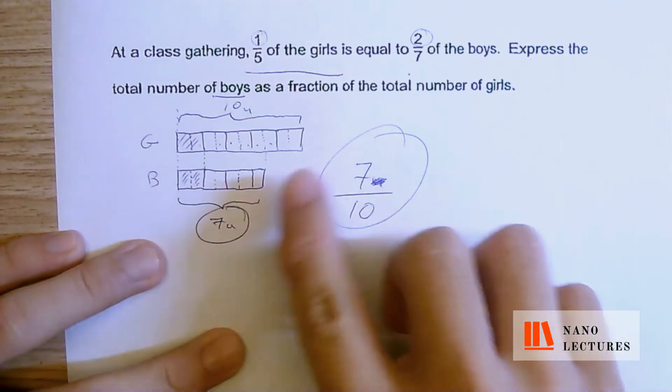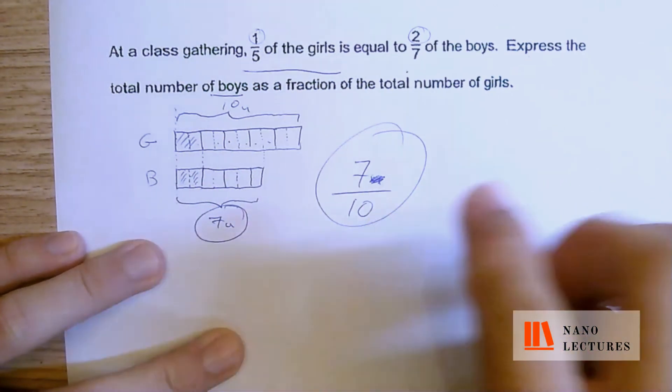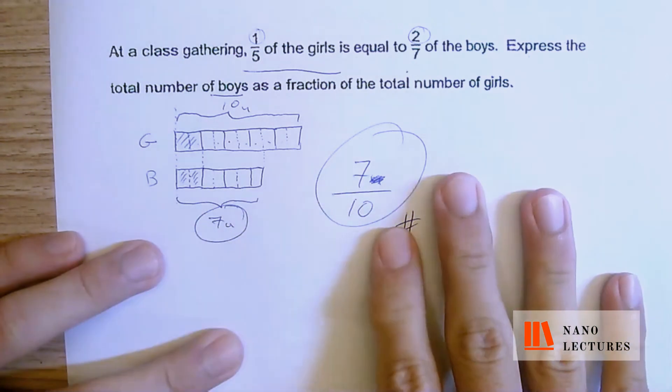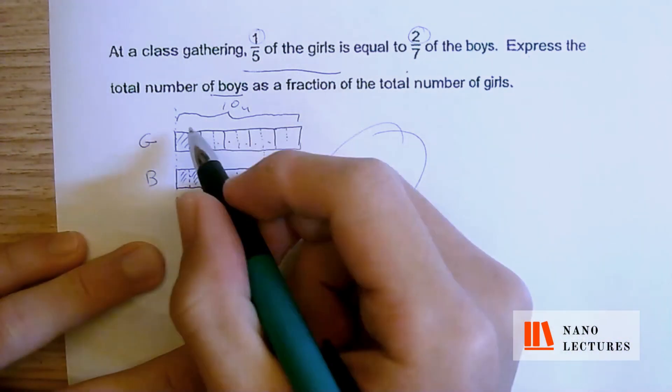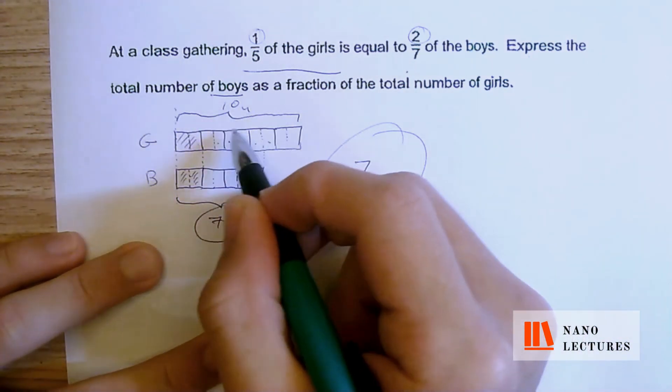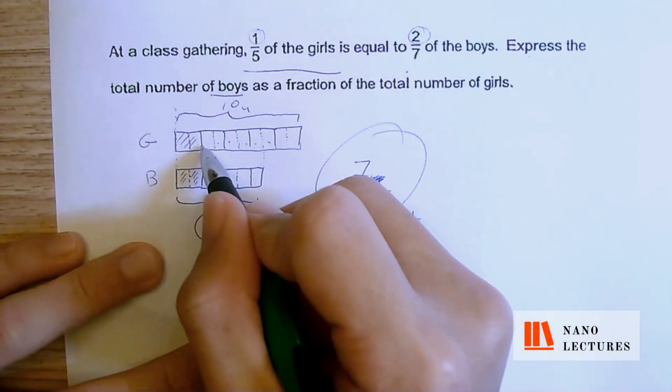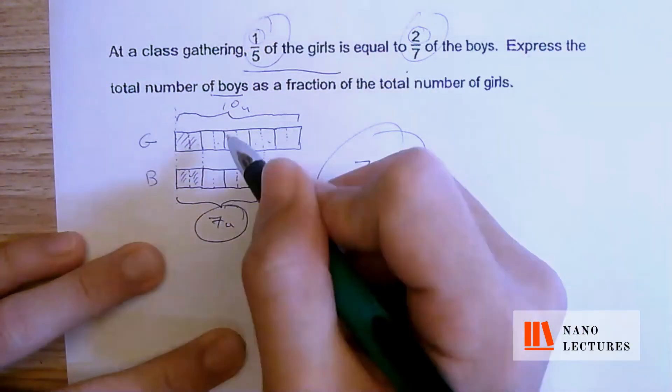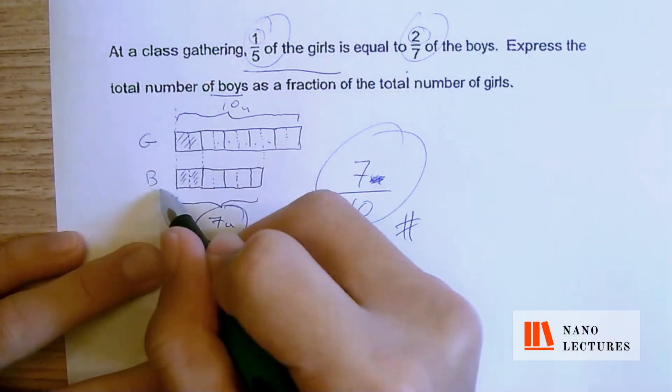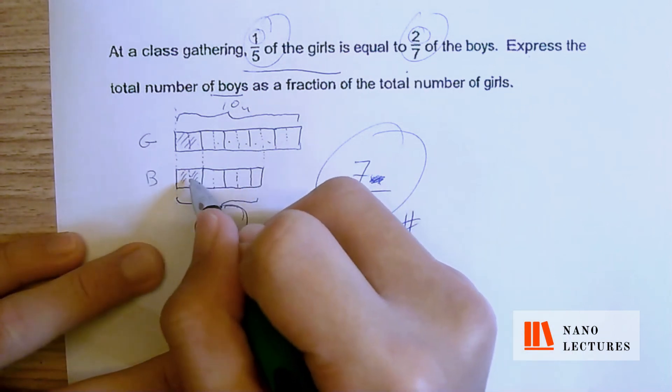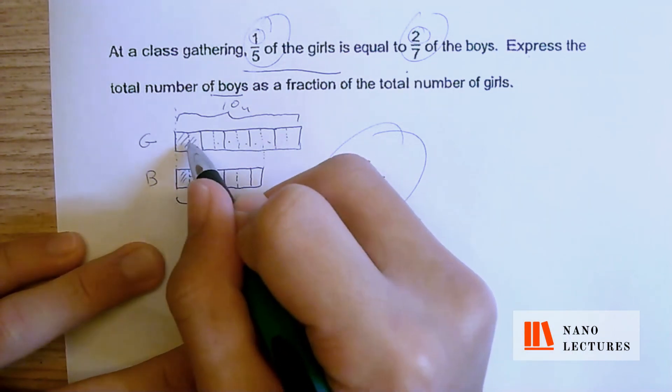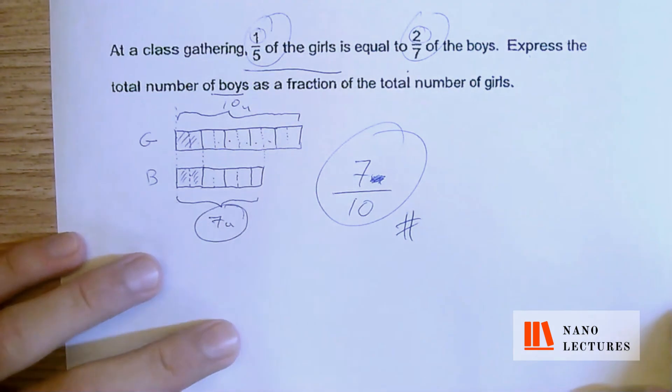See, even from the model itself, without any working and whatsoever, you can get the answer. So if you're a parent watching this, remember to always learn how to draw the model, and explain to your kid how to do this fraction to fraction comparison. Draw one part first, draw the other one, and if you split it, and if it's identical, split it for the girls as well.